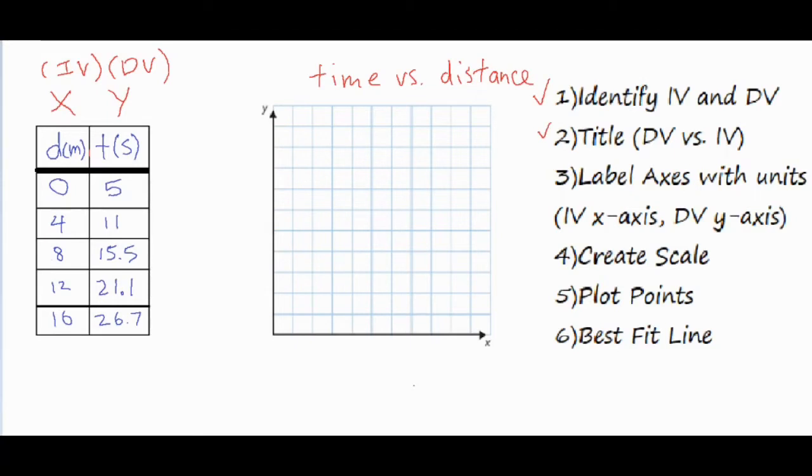Number three, we're going to go ahead and label our axes with units. So my X-axis is always going to contain my independent variable, so I would write distance and then put the unit of meters. And I'm going to do the same thing for the Y-axis except with the dependent variable. My dependent variable is time, measured in seconds.